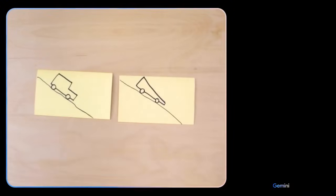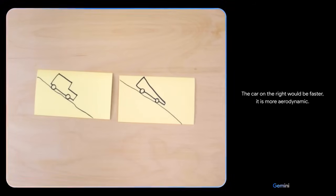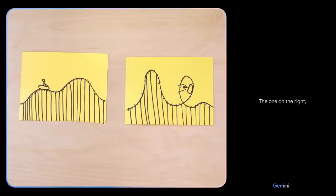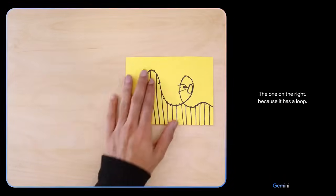Based on their design, which of these would go faster? The car on the right would be faster. It is more aerodynamic. Which looks more fun? The one on the right because it has a loop.